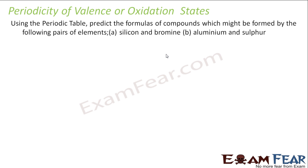Let's see some examples using the periodic table to predict the formula of compounds formed from silicon and bromine and aluminum and sulfur. Let's start with silicon and bromine first.